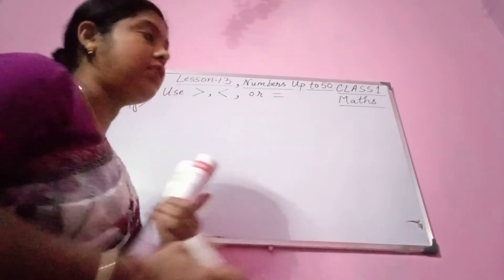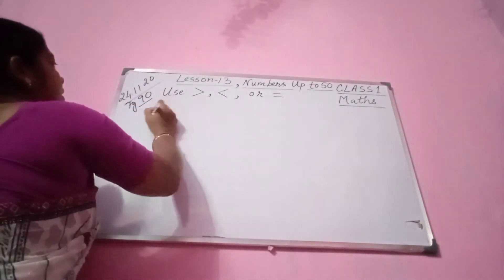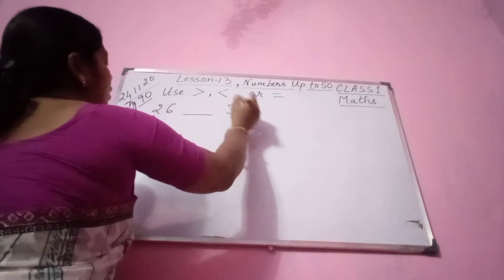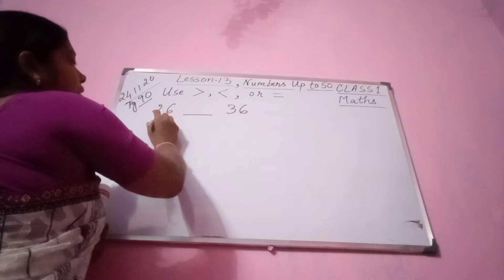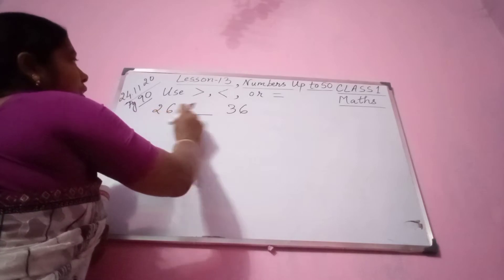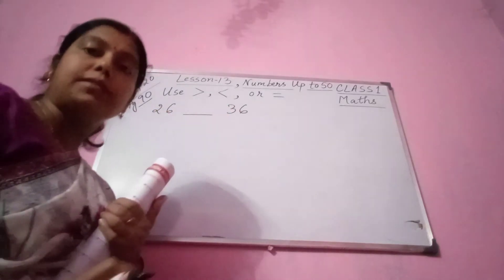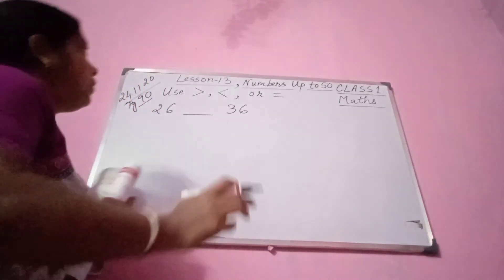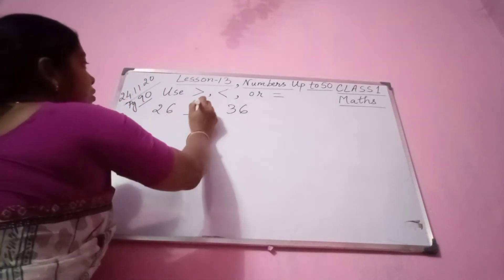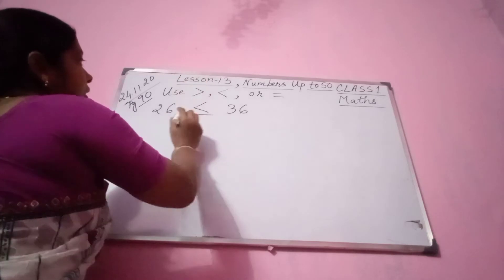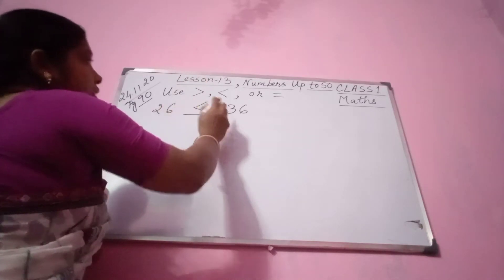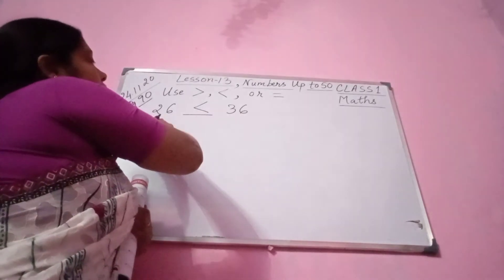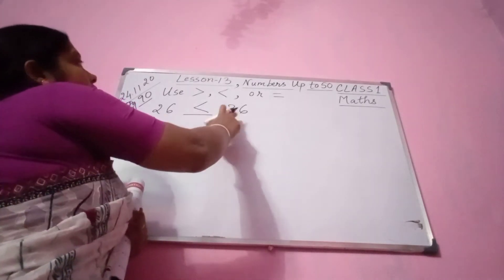So 26 and 36. Number 1 — you see what is given? 26 dash 36. Now you see here 26 is smaller and 36 is bigger. So you see here what we are going to do is we are going to put this sign. That means 26 is smaller than 36. We are always going to compare the first number — 26 and 36.